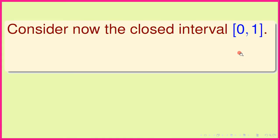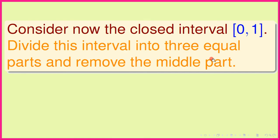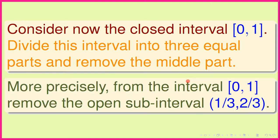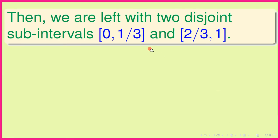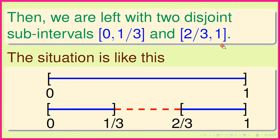Consider the closed interval [0, 1]. Divide this interval into three equal parts and remove the middle part. More precisely, from [0, 1] remove the open sub-interval (1/3, 2/3). Then we are left with two disjoint closed sub-intervals: [0, 1/3] and [2/3, 1]. The situation is like this: we have the original closed interval [0, 1] and after removing the middle part we are left with these two sub-intervals.